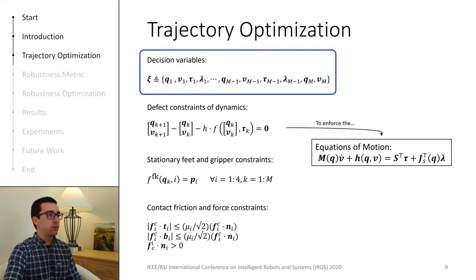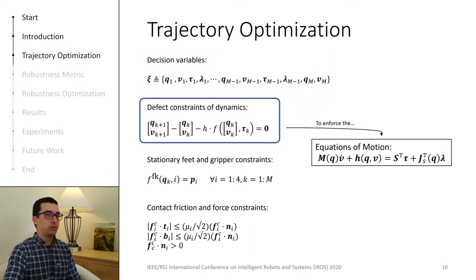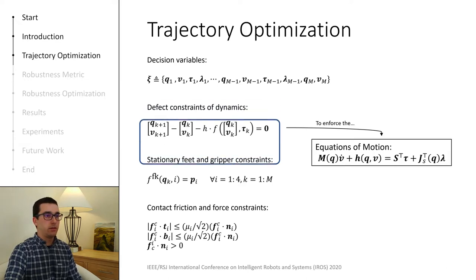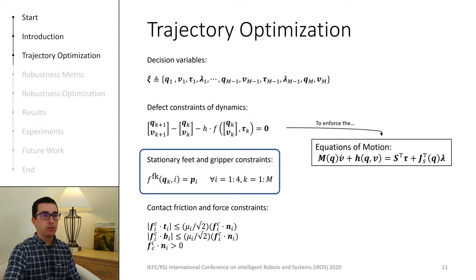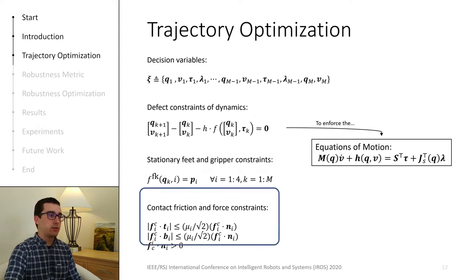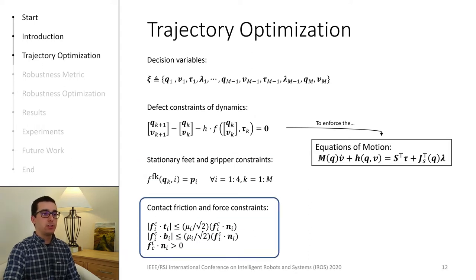This representation of the trajectory is redundant, and so we need to enforce the whole body dynamics with this nonlinear equality constraint. We also define additional constraints for the positions of the feet and the end effector. And finally, we constrain the ground reaction contact forces to lie within the boundaries of the linearized friction cone.